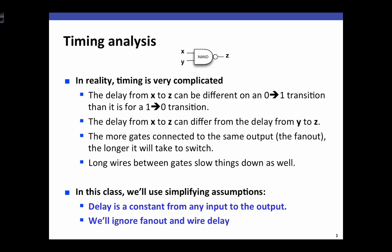In the general case, propagation delay is very complicated, and there are a number of reasons for this. First, the delay from one input, say x, to the output can be different based on whether x transitions from 0 to 1 versus from 1 to 0.